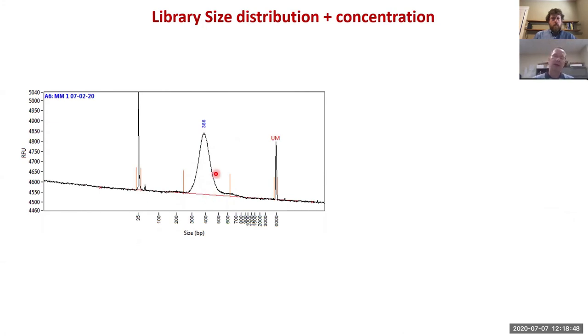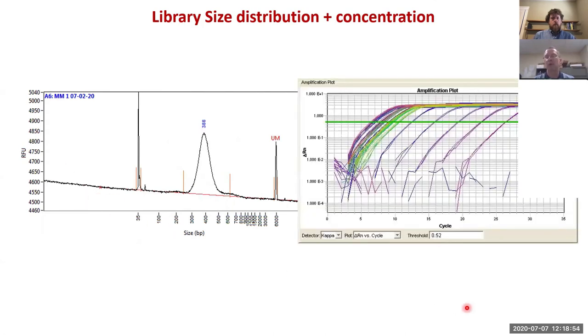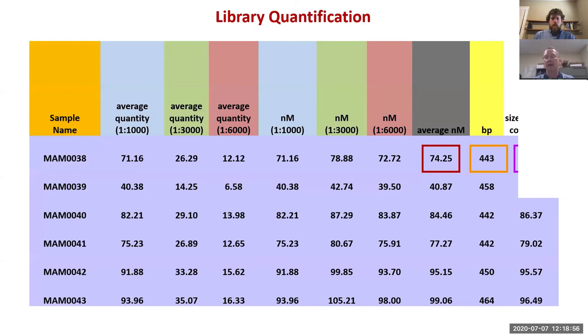We get an average library size from this fragment analyzer experiment and then we combine that with qPCR to calculate very exactly the concentration of the library because it's really important that you don't over-cluster or under-cluster the flow cell. The qPCR gives us an average nanomolar concentration. We correct that with the base pair and then we add up with the corrected adjusted size.